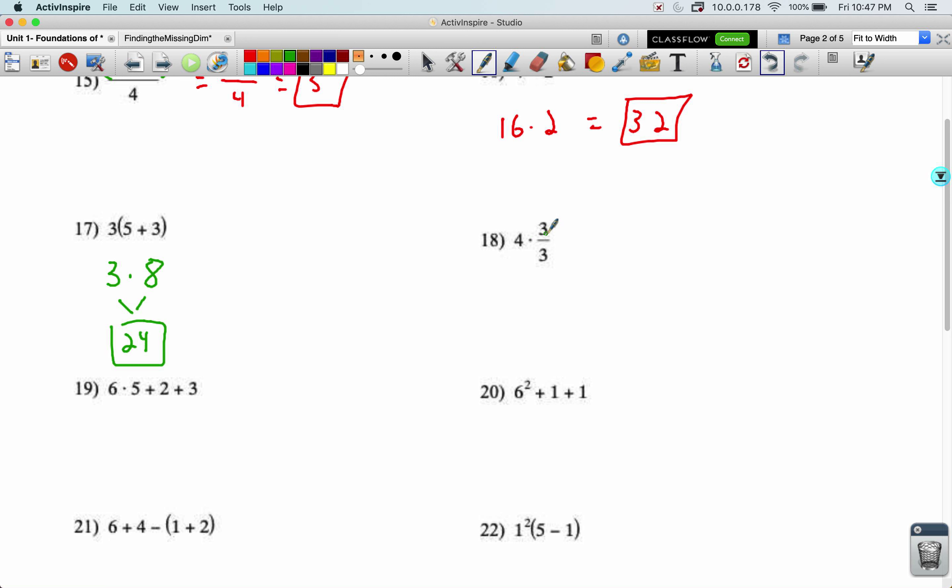Four times three over three. Now PEMDAS says we should go left to right with the multiplication and division, but it's okay to actually go out of order here. I can do the three divided by three and then multiply. You don't have to go left to right. You can go in whatever order you want as long as we do it in the right way. So I can do the three divided by three. I can turn that into a one and this is now four times one is a four.